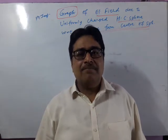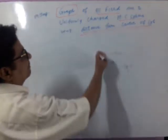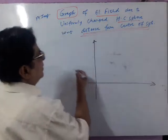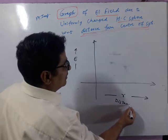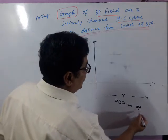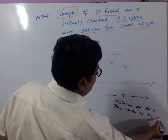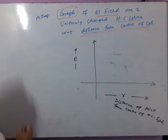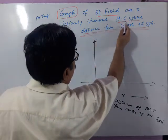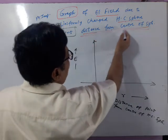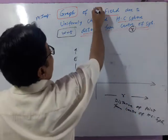We are drawing the graph between electric field E versus distance r, where r is the distance of a point from the center of a uniformly charged hollow conducting sphere. The distance from center of sphere we generally write as r, and the electric field we write as E.